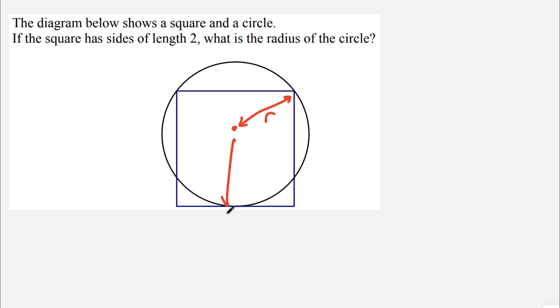So I know that this length here is also R, and because of this side length being 2, I can say that that side length there is 2 minus R.